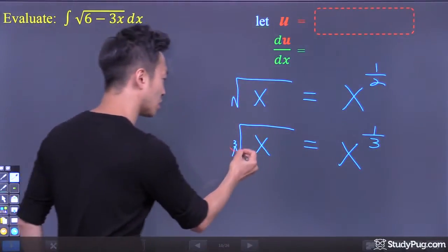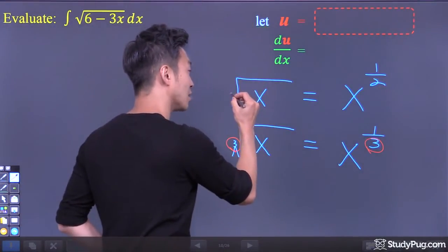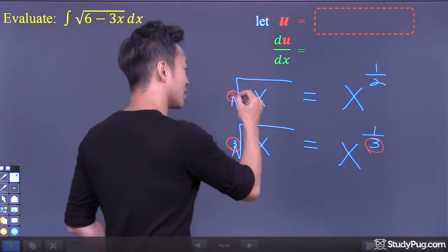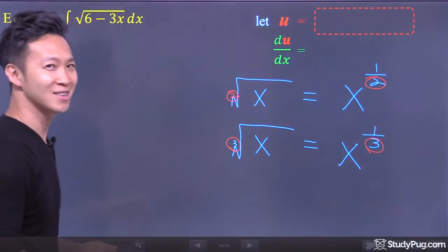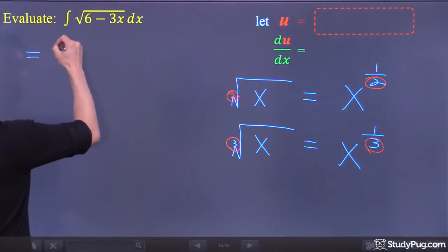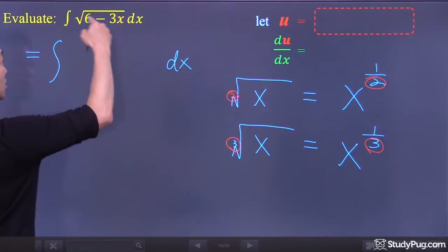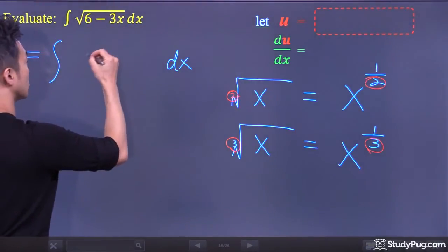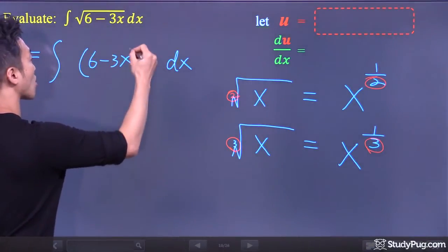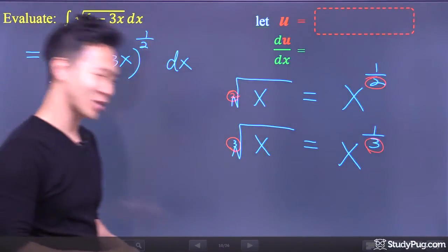Basically, the 3 here corresponds to the 3 in the exponent. Now, square root actually has a hidden 2 — 'square' means 2 — and the 2 right here corresponds to the 2 in the exponent. So let's do that and convert our expression.